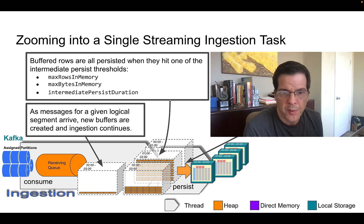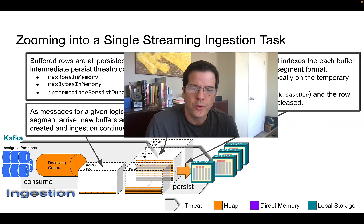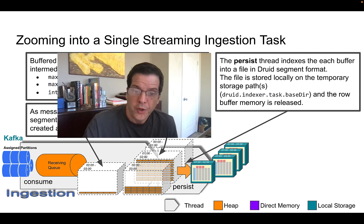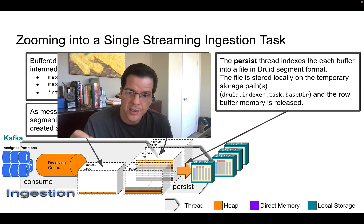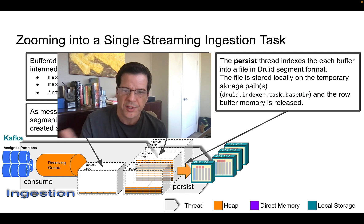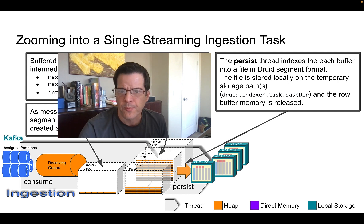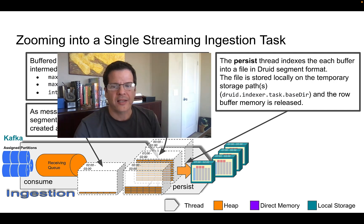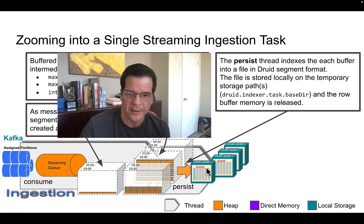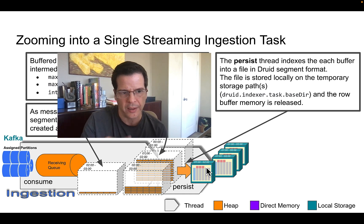Consumption continues in the consumption thread while the persist thread takes that set of buffers and converts them into the Druid segment format — it columnarizes the data, creates the indexes, and puts them into segment format. There could be many individual intermediate persists for segments corresponding to the same time interval. These intermediate persist files are stored in the base directory for the task, defined by the druid.indexer.task.baseDir parameter. This is where we start using local storage.